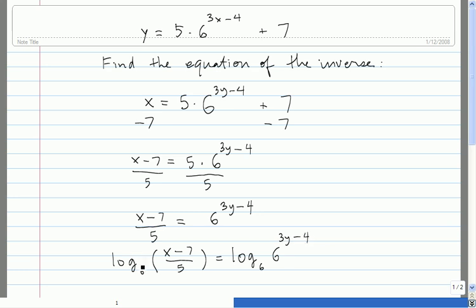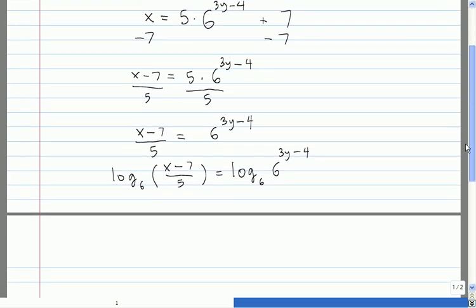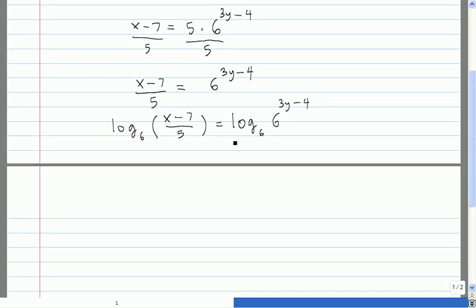So we have log base 6 of x minus 7 over 5 equals log base 6 of 6 to the 3y minus 4. Now because of the inverse properties, log base 6 of 6 to the 3y minus 4 is just equal to 3y minus 4.